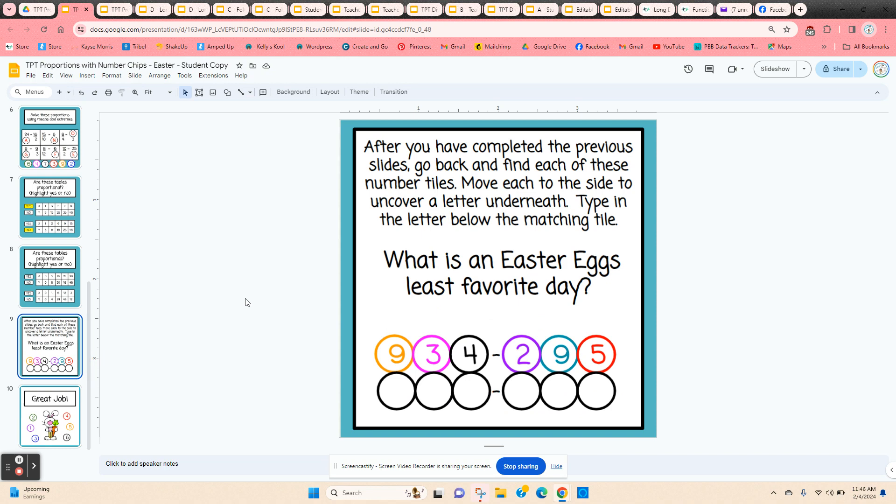Now when they get to the final slide, slide nine, they have an Easter riddle. They're going to go back and look through each one of the previous slides. When they find a yellow nine, they're just going to move it to the side, and then there'll be a letter underneath. They're going to type that letter here.